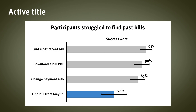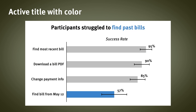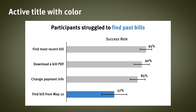Participants struggled to find past bills. If we want to make this even easier to process, we can take it a step further by using the same color blue on the key phrase in the title, Find Past Bills. That way, we're connecting the title to the data value of interest.